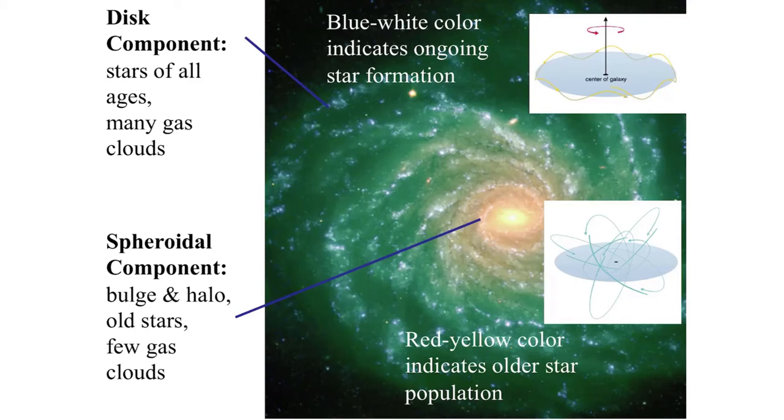These blue stars live very short lives. A 10 solar mass star has a main sequence lifetime of about 10 million years, and it takes 250 million years for a star to make one complete orbit. So they're gone way before even making one complete orbit. To have a blue color to your galaxy, you have to be making stars currently because those blue stars just don't last very long.